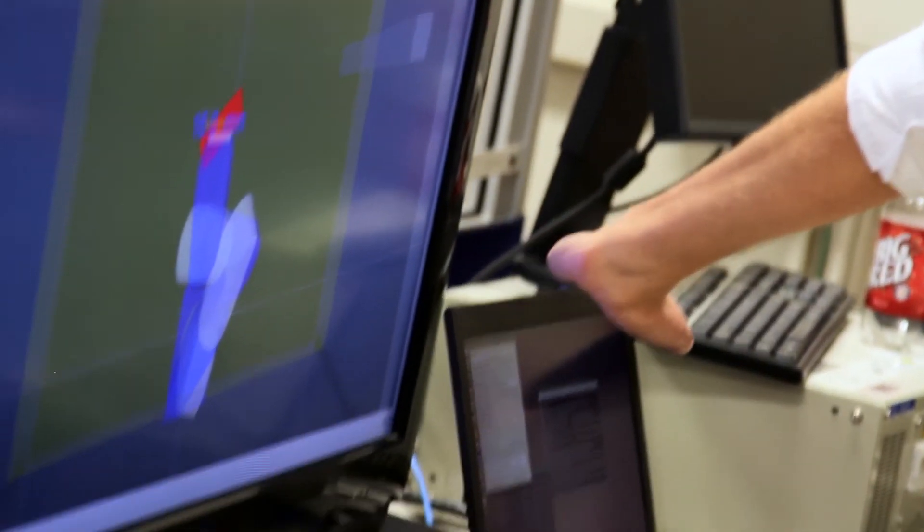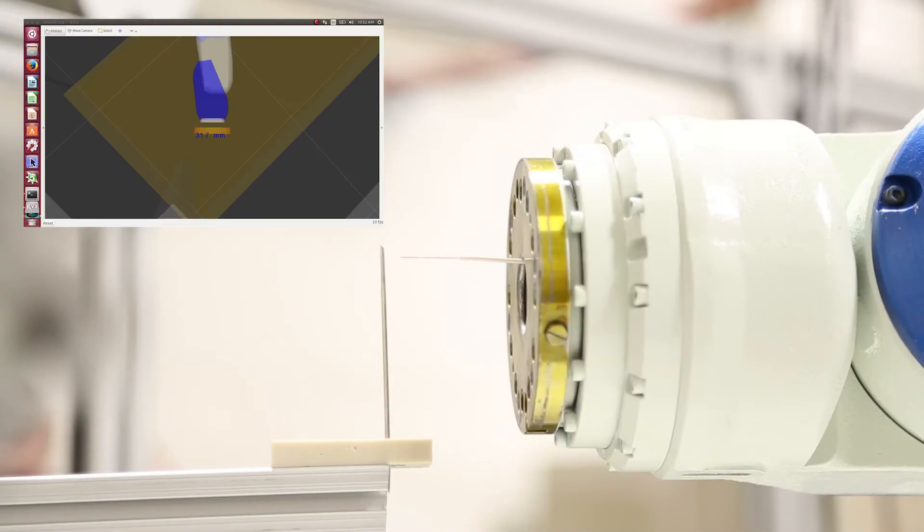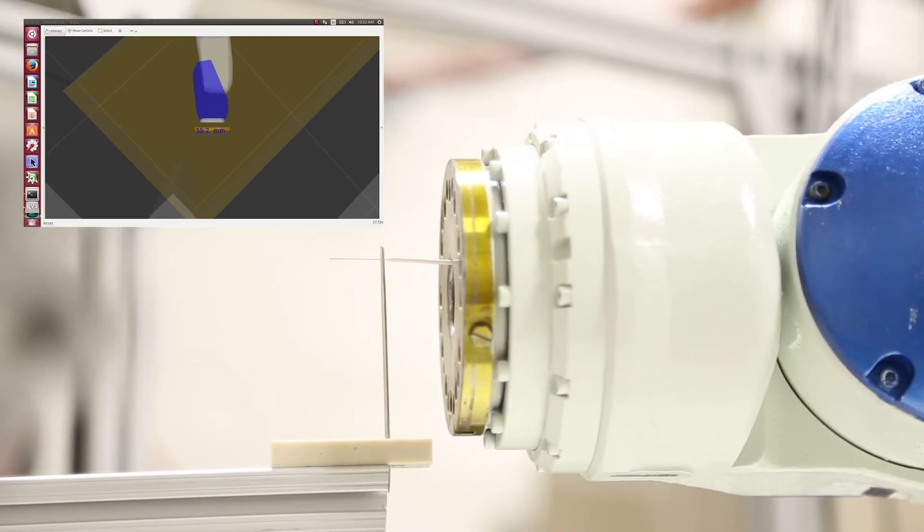When the human operator can interact with a robot in an intuitive way, he or she can focus more on the exact procedure of task execution.